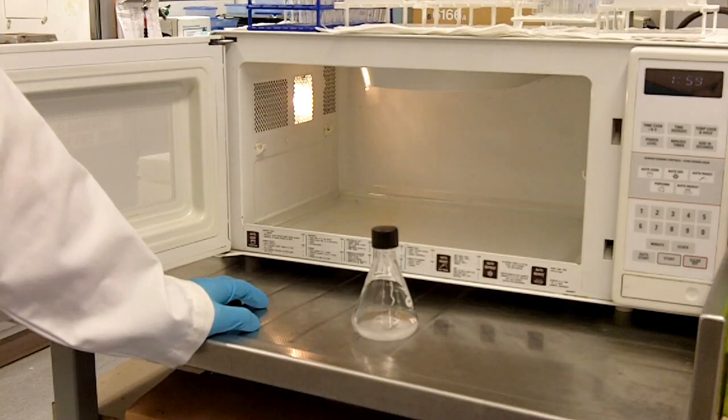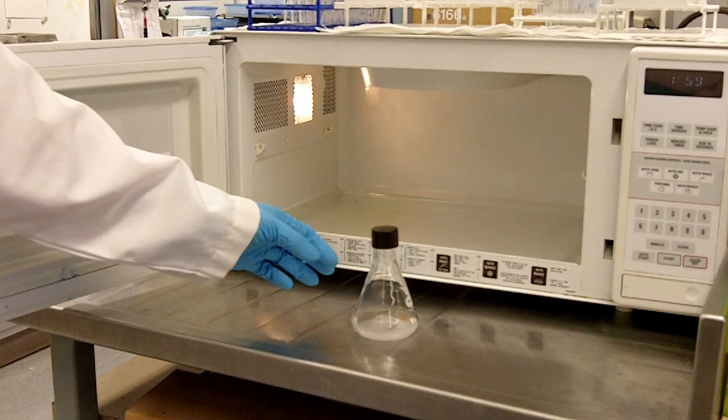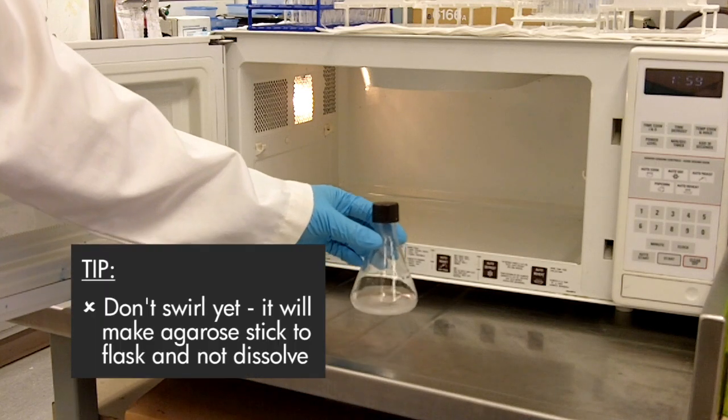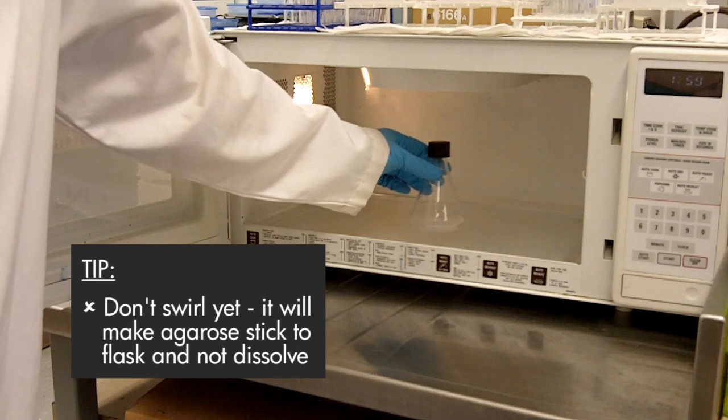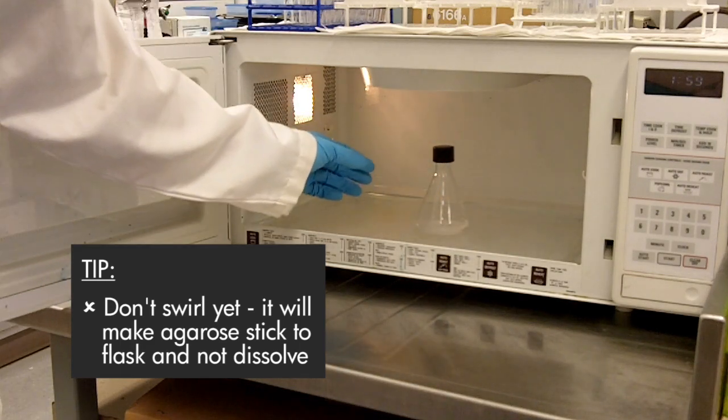To dissolve the agarose we'll just use a microwave. One important thing to do is that you do not swirl your mixture before you heat it up because the undissolved agarose is just going to get onto the wall of the flask and will not dissolve.